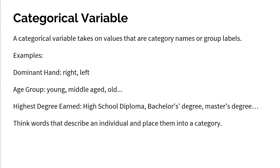The highest degree earned. Do you have a high school diploma, a bachelor's degree, a master's degree? Again, you're getting labeled. You're getting put into a bin because of that characteristic. So a big thing here is to think about words. That's what makes a categorical variable a categorical variable.